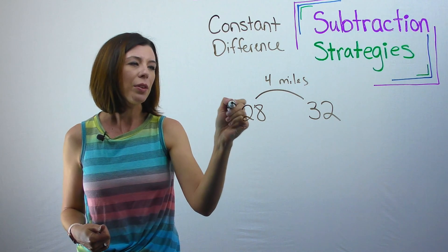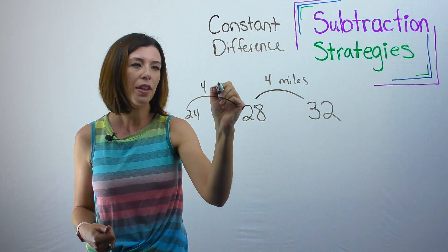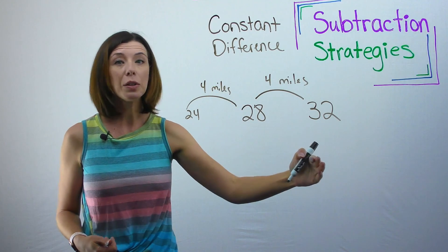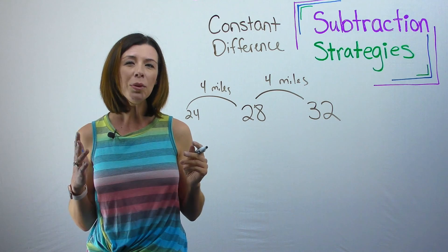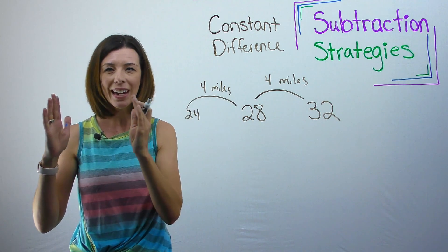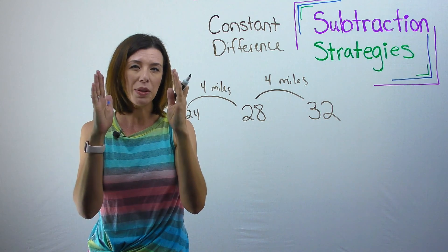Well, then that means that there would be another station at 24 miles, right? Because I know that it's every four. And likewise, there would be another station at 36 miles. You're getting my picture here. So you can almost think of this as like if I were sliding across on a number line. I'm still maintaining the distance between the two numbers.